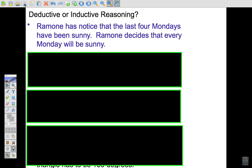Is he basing the, he says that the next Monday will be sunny. Now, is he basing this on facts or is he basing it on observation from the past few Mondays? And the answer to this is he's basing it on observation. He's observed the last four Mondays have been sunny. So he's thinking, all right, the next Monday will be sunny. So this would be inductive reasoning.